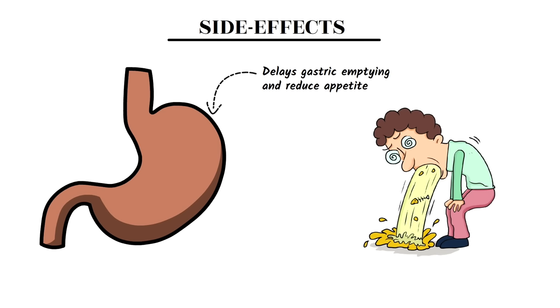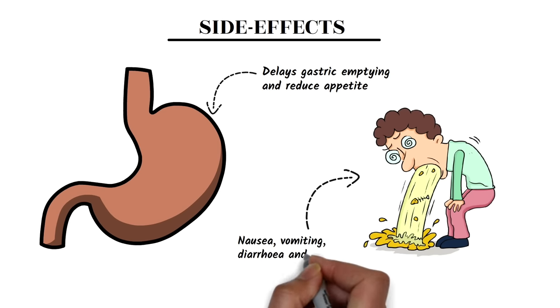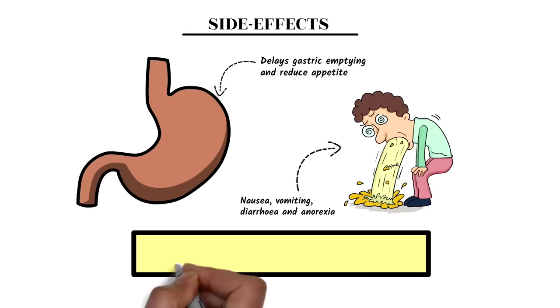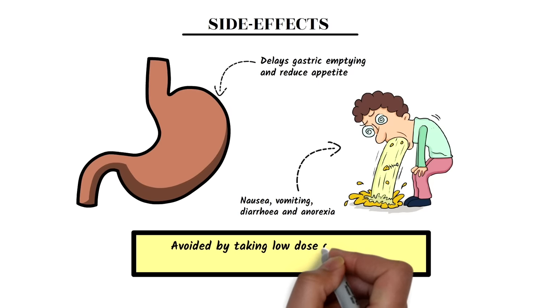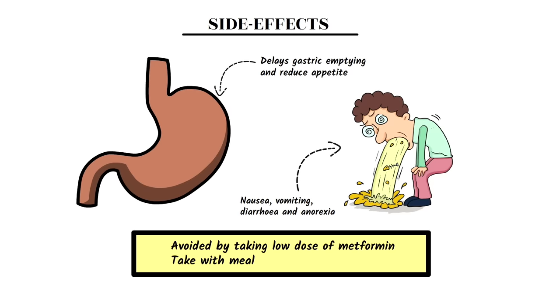It causes the most common side effects like nausea, vomiting, diarrhea, anorexia, and even constipation. These side effects can be avoided by taking a low dose of metformin or simply taking it with meals.